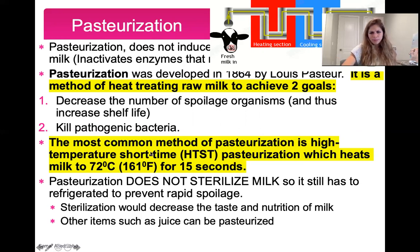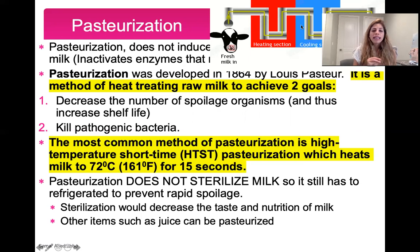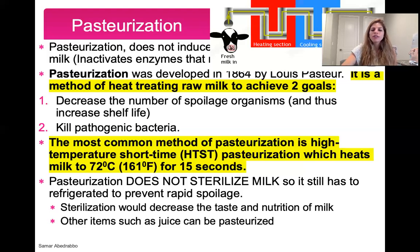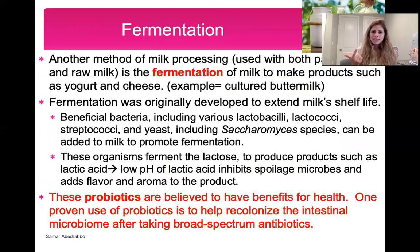Pasteurization is essentially flash heating — high heat for a very short time. The milk gets heated quickly: 72 degrees Celsius for 15 seconds. Just know that pasteurization does not sterilize milk — sterilization means removing all microbial life, and we don't sterilize milk because that would remove a lot of the vitamins and nutrients. That's why we do pasteurization instead. And keep in mind pasteurization isn't just used with milk; it can also be done with juice.